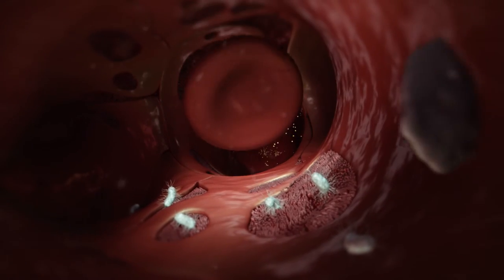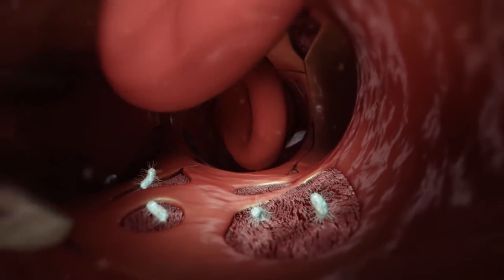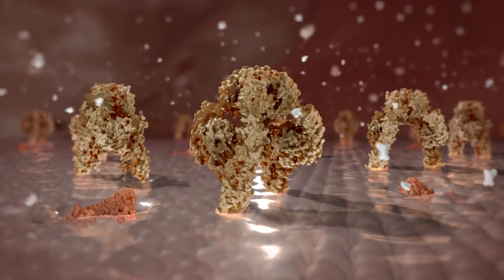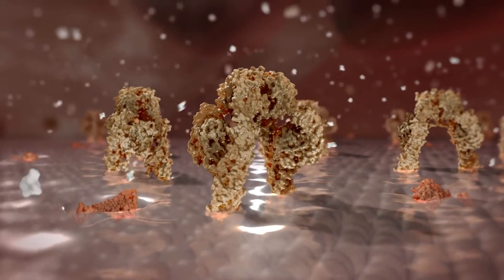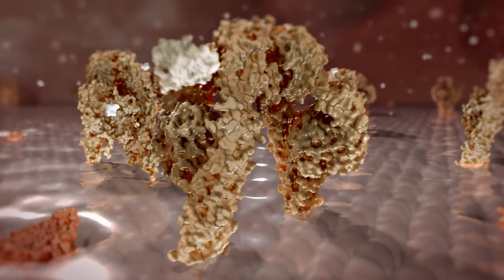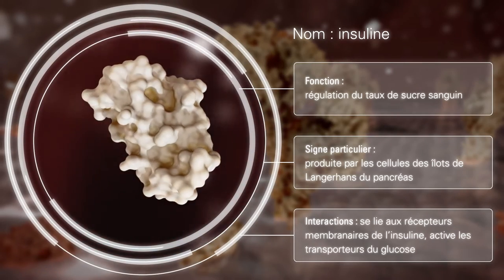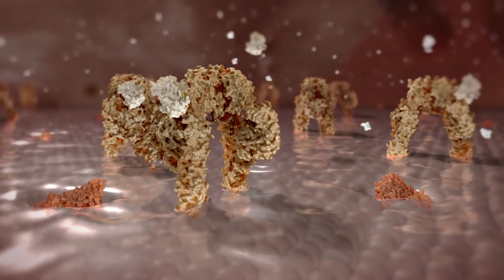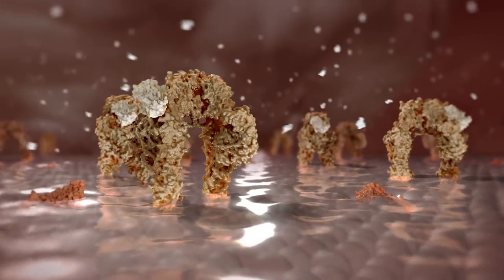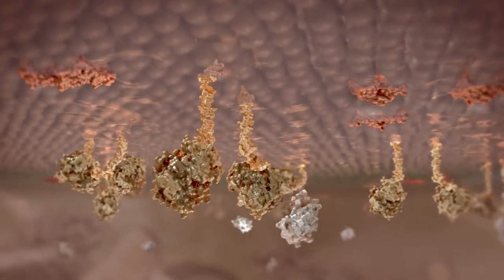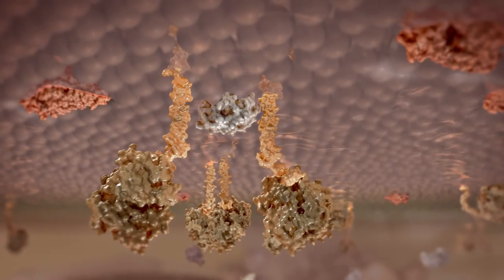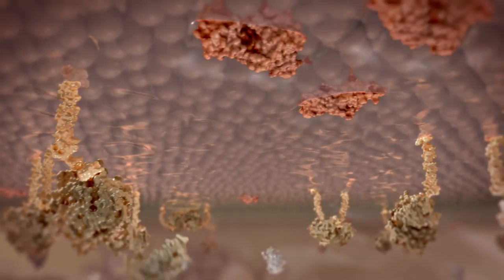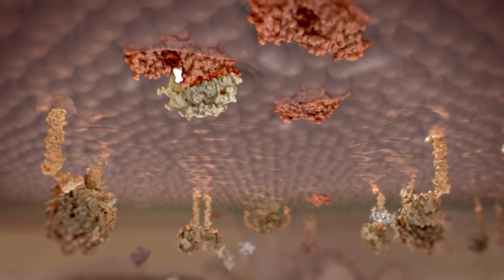La réaction inflammatoire généralisée déclenchée par la parodontite peut aussi affecter la régulation du taux de sucre sanguin, la glycémie. En réponse à l'élévation de celle-ci, le pancréas produit de l'insuline pour faire baisser le taux de sucre. En temps normal, les récepteurs de l'insuline fixent cette hormone, permettant le transport du sucre dans les cellules. Le sucre contenu dans le sang après un repas est ainsi absorbé pour être transformé en énergie ou stocké, et le taux de sucre sanguin baisse.